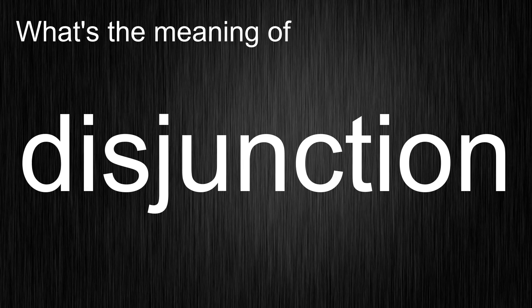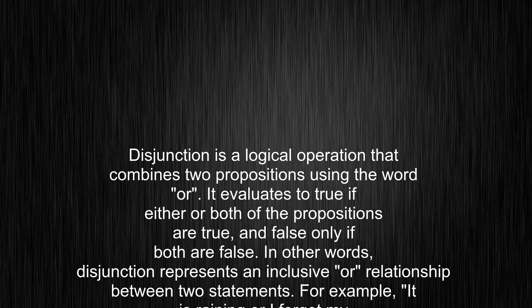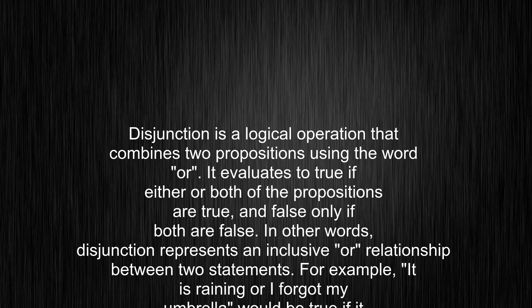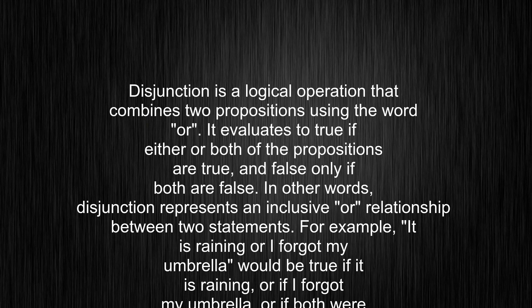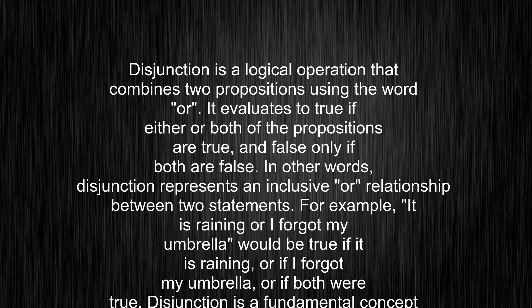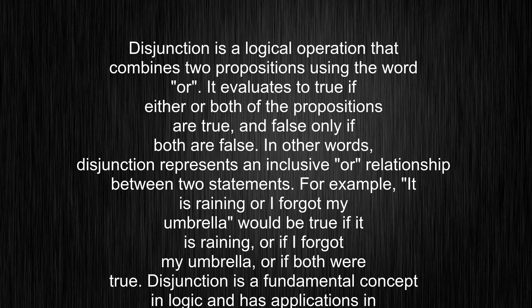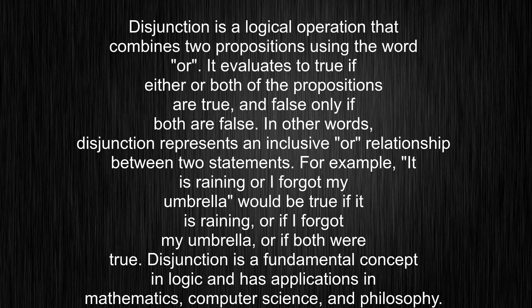Disjunction is a logical operation that combines two propositions using the word 'or.' It evaluates to true if either or both of the propositions are true, and false only if both are false. In other words, disjunction represents an inclusive or relationship between two statements.